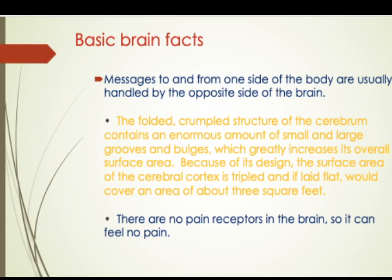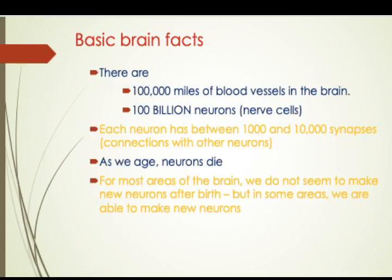It is also important to note that there are no pain receptors in the brain itself — the brain actually feels no pain. It is the responsibility of the lobes to sense pain and send a signal, for instance, if somebody pricks you. There are about one lakh miles of blood vessels in the brain, and about a hundred billion neurons — what we call nerve cells.